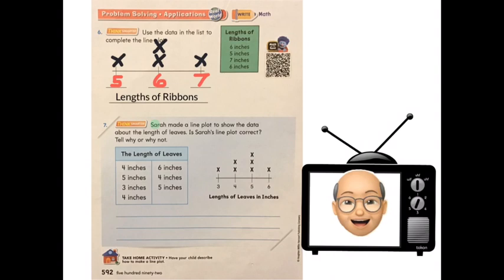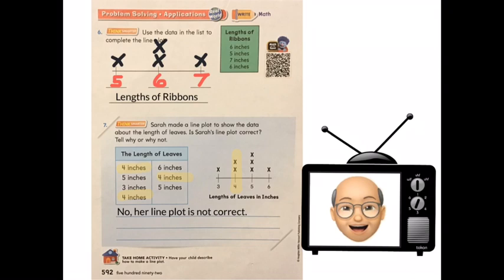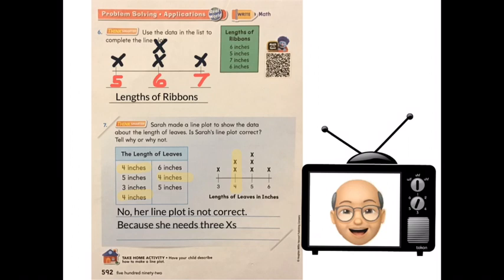Now let's go to number 7. Sarah made a line plot to show the data about the length of leaves. Is Sarah's line plot correct? Tell why or why not. Well, looking at the chart titled The Length of Leaves, we have a 4-inch leaf, a 5-inch leaf, 3, 4, 6, 4, and 5. Let's take a look at her line plot. Is it correct and does it match the chart? How many 4-inch leaves do we have? 1, 2, and 3. But looking at the line plot, she's only got 2 X's above the 4, and there should be 3. So her line plot is not correct. So we can write, no, her line plot is not correct because she needs 3 X's over the 4, and she only has 2.